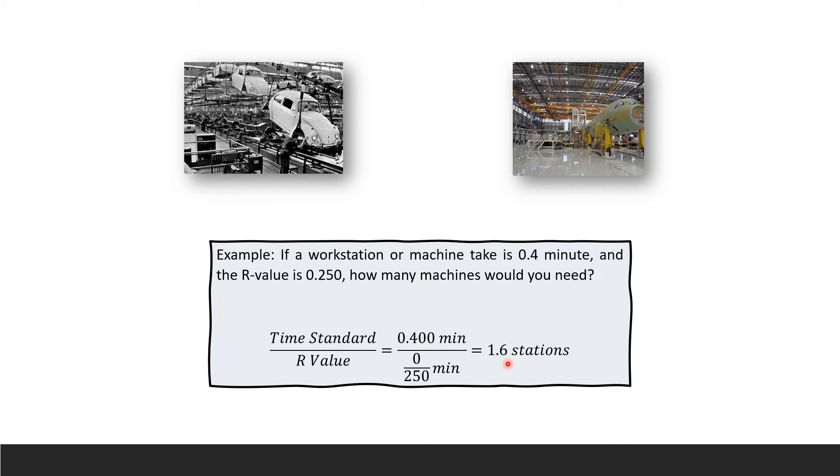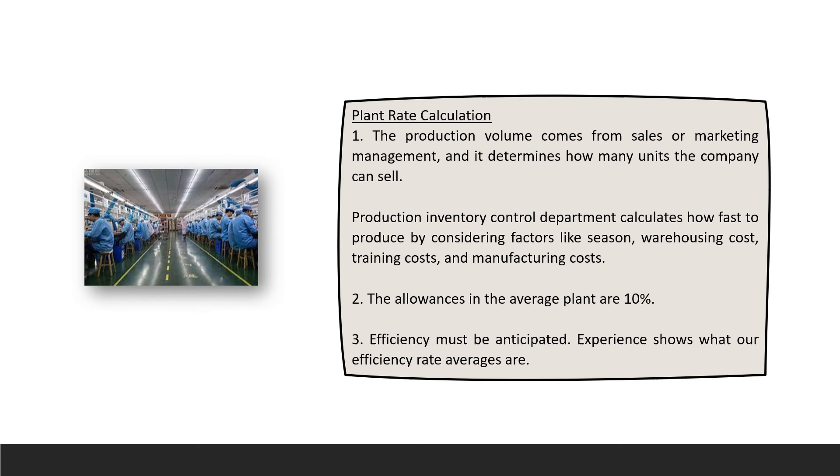0.4 divided by... it's actually one divided by 0.250, that gives you 1.6 stations.